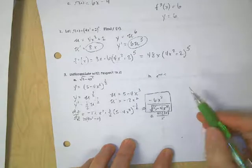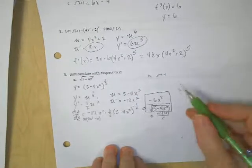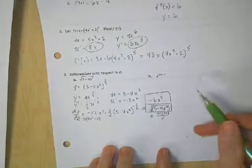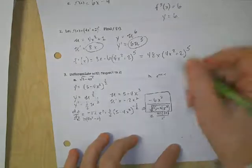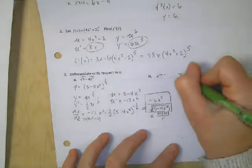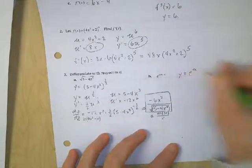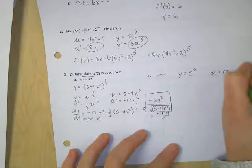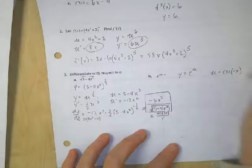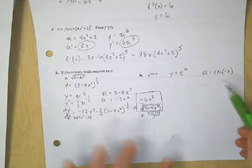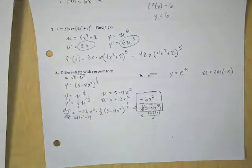Okay, next one. Again, I need u substitution. So I'm going to write this as y equals e to the u. My u is equal to cosine of negative x. Okay, now this is kind of interesting because we have chain rule going on over here as well.